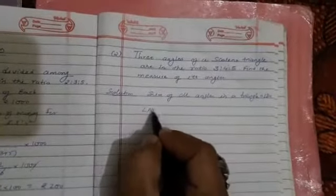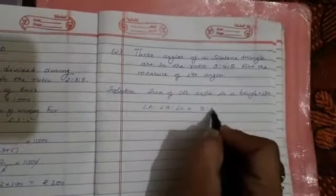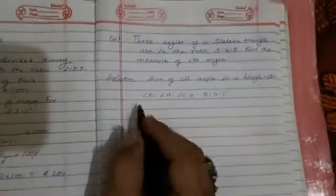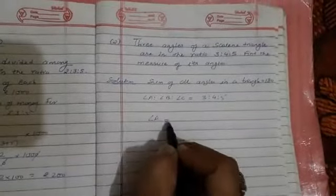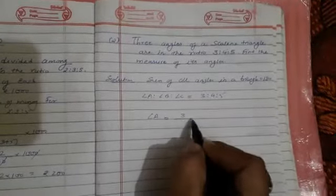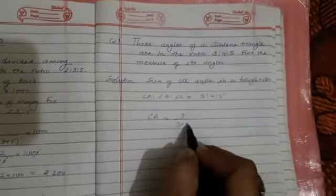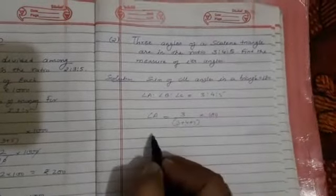So angle A ratio angle B ratio angle C, we have 3:4:5. For angle A, we write 3 upon 3 plus 4 plus 5, and the total sum of angles is 180 degrees.